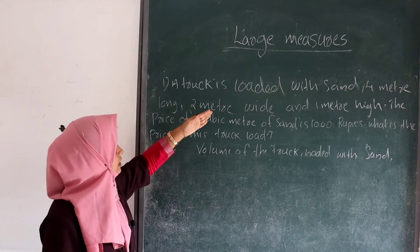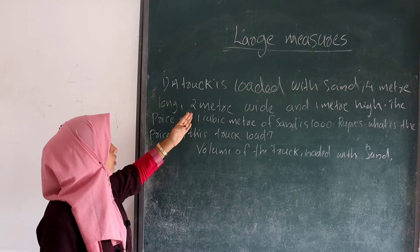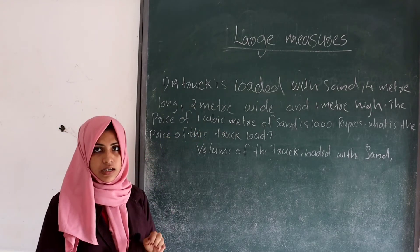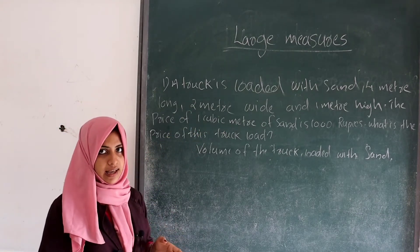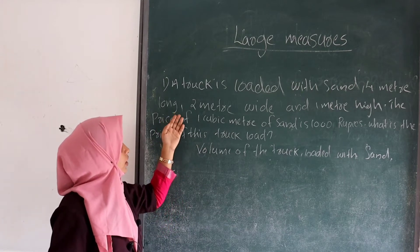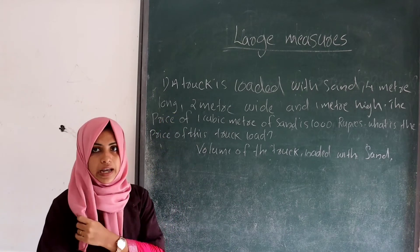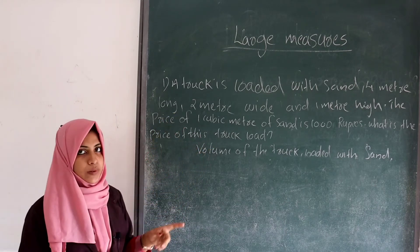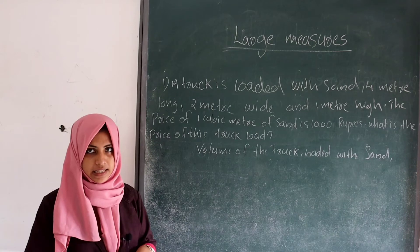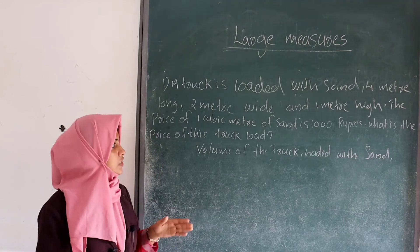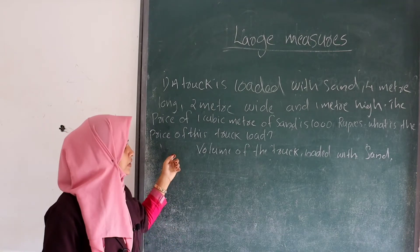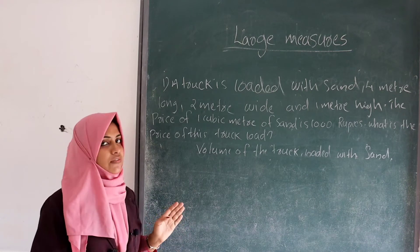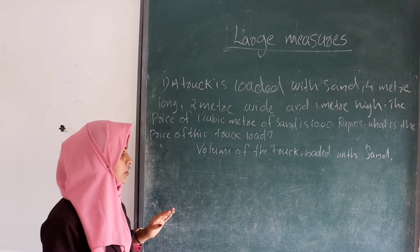Look at the question. A truck is loaded with sand — 4 meters long, 2 meters wide, and 1 meter in height. The price of 1 cubic meter of sand is 1000 rupees. The question is: what is the price of the truck load? First, we find the volume of the truck.